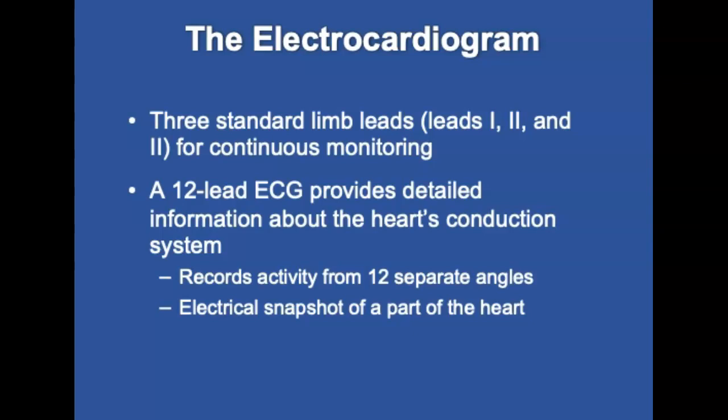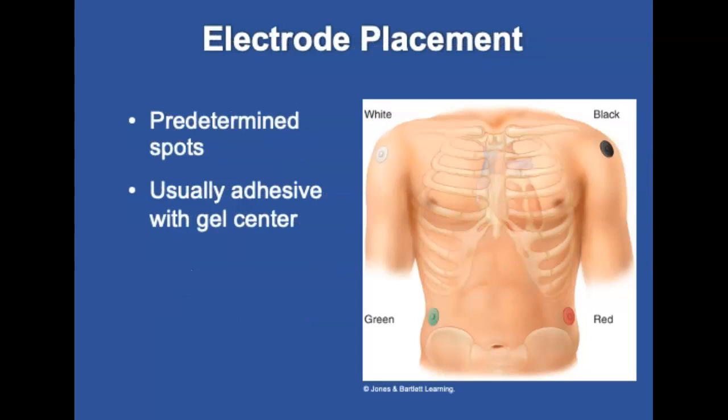Tracings from lead 2 are usually most useful when monitoring, but there are limits to areas of the heart that can be viewed with 3 leads. More detailed information can be obtained from a 12-lead ECG with lead wires and electrodes placed on the patient. Each lead creates an electrical snapshot of a part of the heart, and the monitor records an ECG tracing for each lead for review. The electrodes must be placed in a consistent, predetermined place to get a reliable reading.